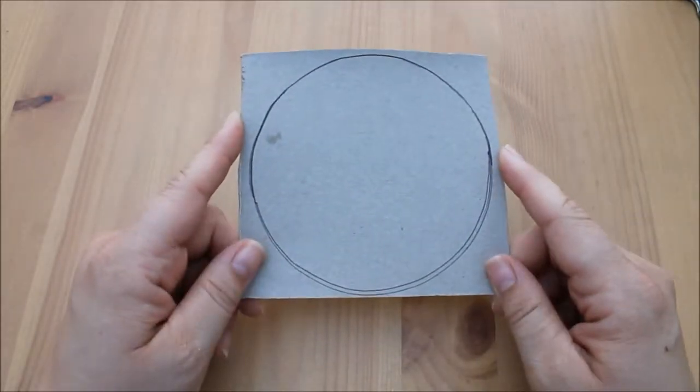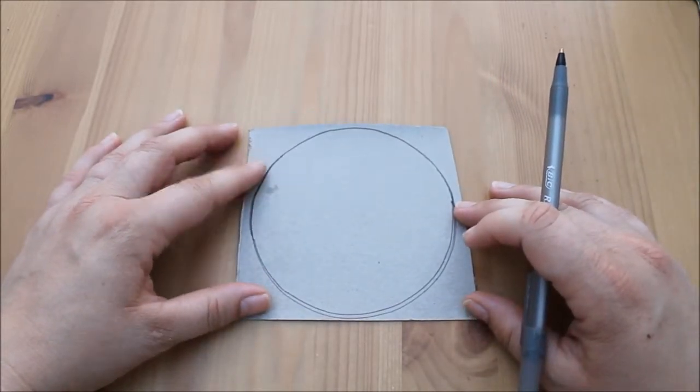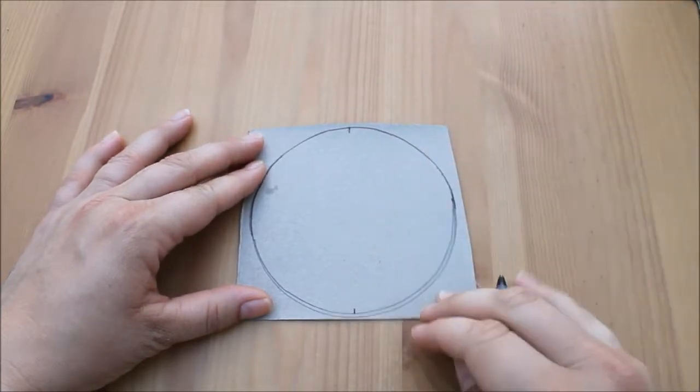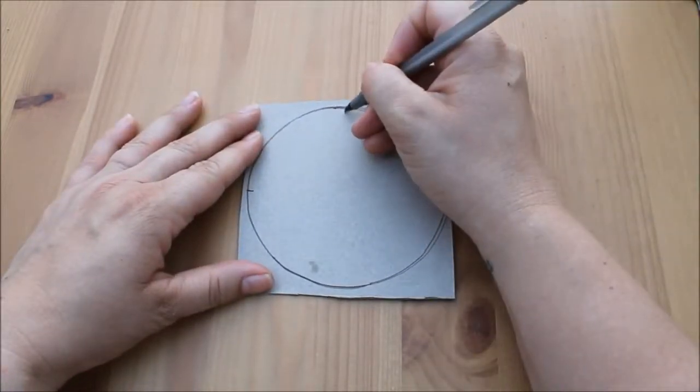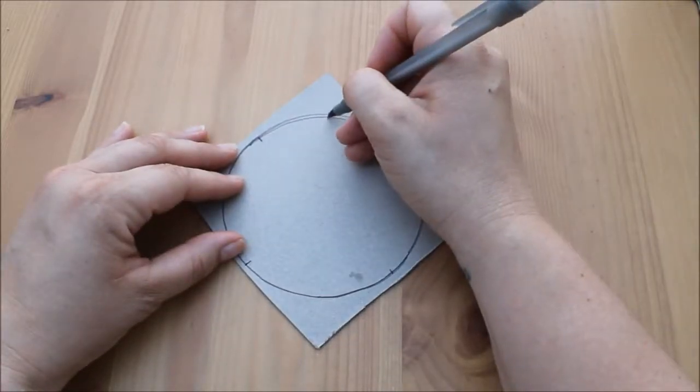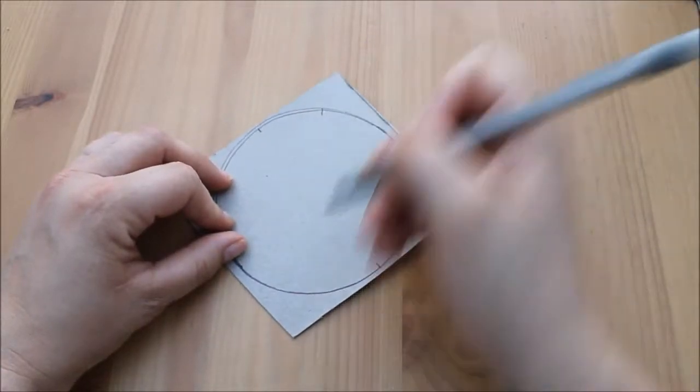We then want to mark off eight points on the circle, so we do the top and the bottom, each side, and then in between those points as well, so we've got eight points on the circle.